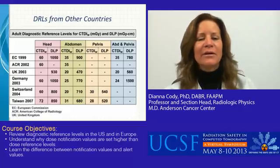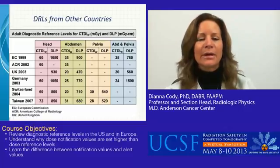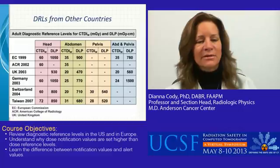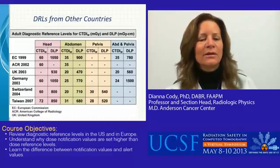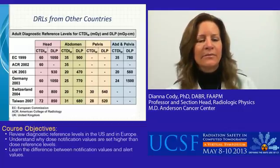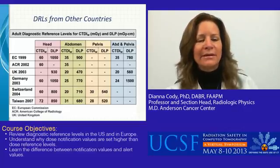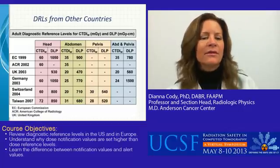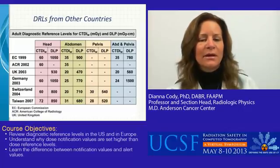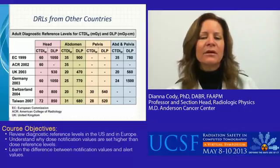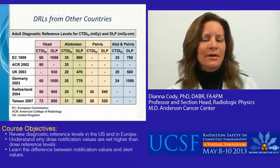You can see across the top we have four different exams shown: the head, the abdomen, the pelvis, and the abdomen and pelvis combined. On the left we can see the different groups that have established these diagnostic reference levels — for example, the European Commission, American College of Radiology, United Kingdom, Germany, Switzerland, and Taiwan. Most of these seem fairly old, ranging from 1999 to 2007, which partly reflects the metric chosen at that time. We can see a range in every one of these columns, so every country has a different take on this same exam.